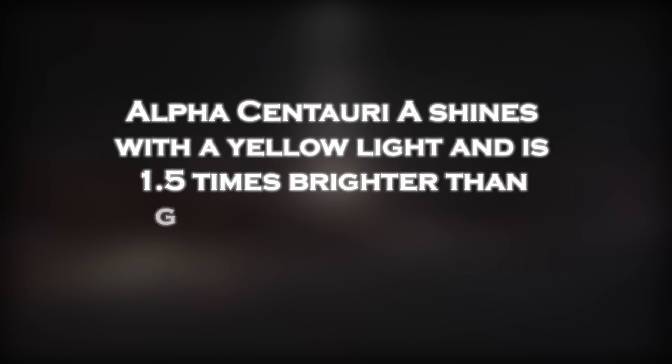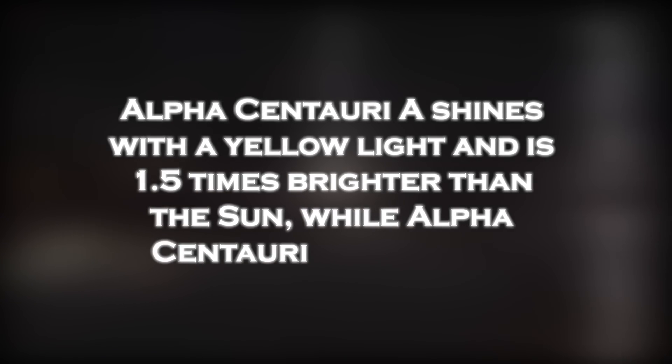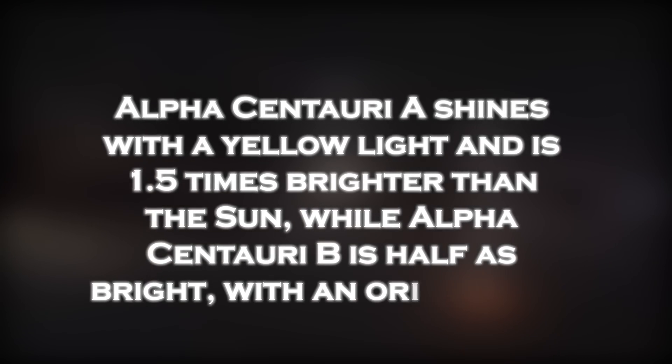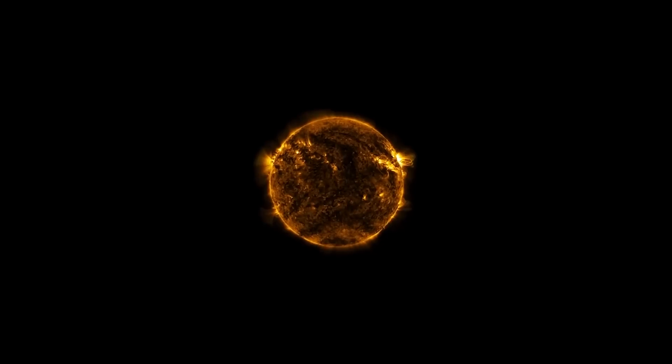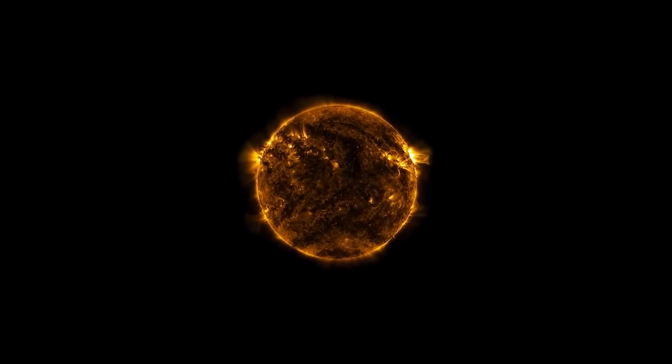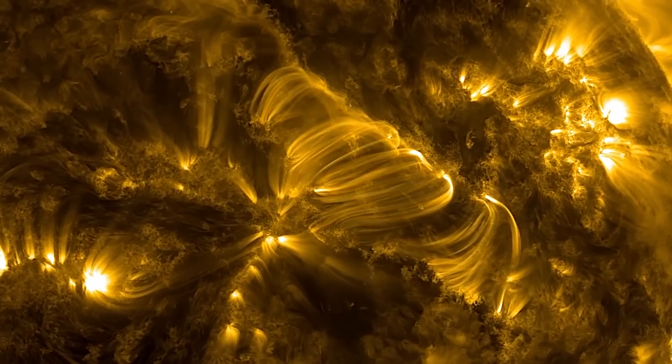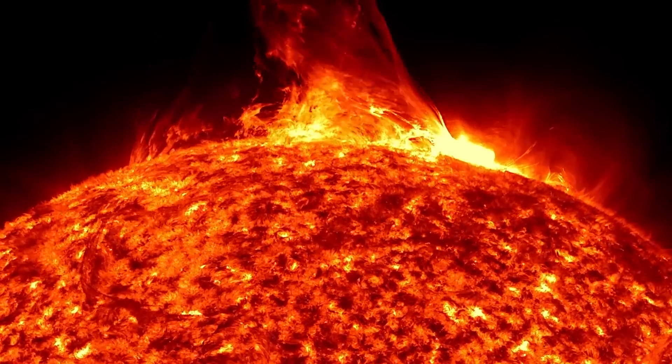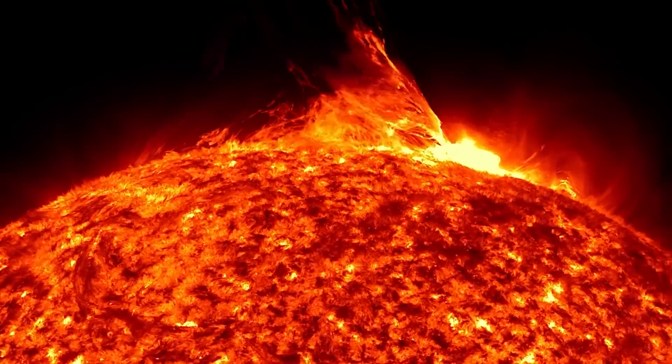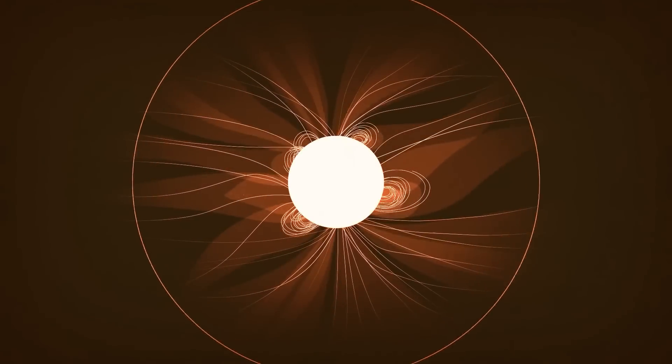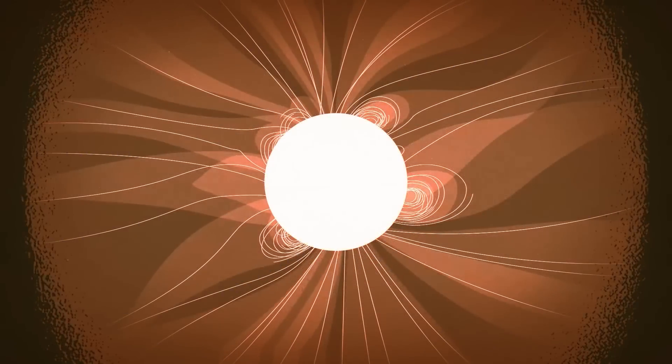Alpha Centauri A shines with a yellow light and is 1.5 times brighter than the sun, while Alpha Centauri B is half as bright with an orange hue. Alpha Centauri A is slightly larger than our sun. Alpha Centauri B is also smaller, so our sun fits exactly between them in size. But where did the signal between these two stars come from?